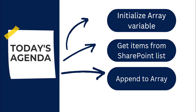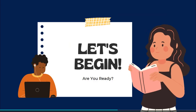These are the three things that we are going to learn in this video. First, we will see how we can initialize an array variable. Then we will see how to get the data from the SharePoint list using the getItems action. And finally, we will see how to use the appendToArray action to append the values into the initialized array. So let's begin.